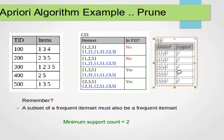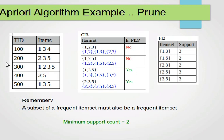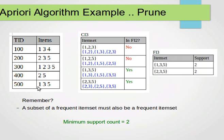For {1,2,3}, the subsets are {1,2}, {1,3}, {2,3}. Since {1,2} is not in F2, we immediately remove {1,2,3}. Similarly for {1,2,5}: {1,2} is not in F2, so we remove it. For {1,3,5}: {1,3}, {1,5}, and {3,5} are all in F2, so we keep it. For {2,3,5}: all its subsets are in F2, so we keep it. That's how pruning works — if any subset is not in the previous frequent item set, remove that candidate.